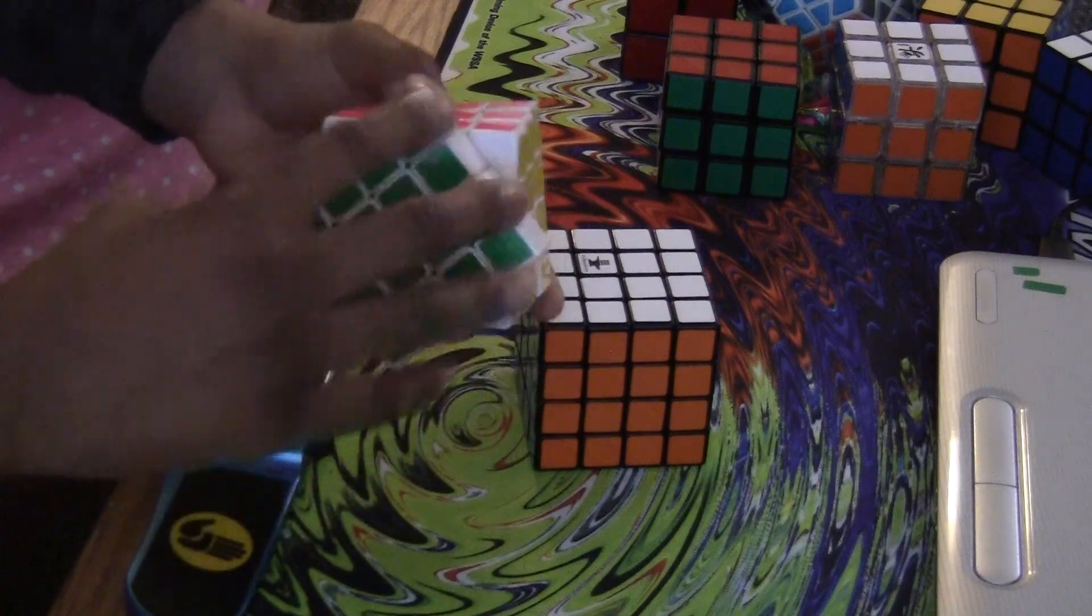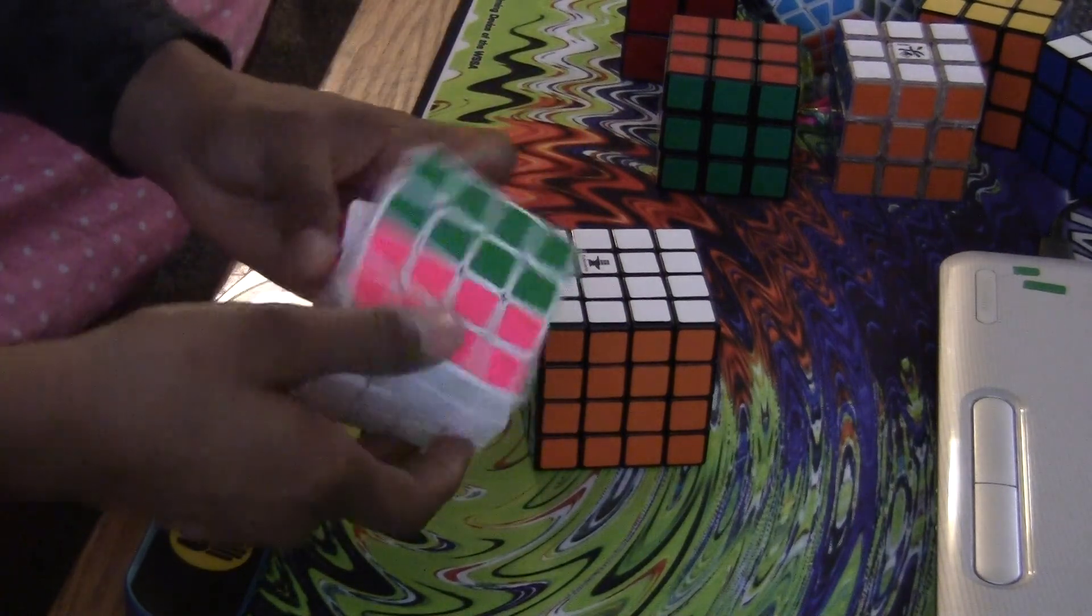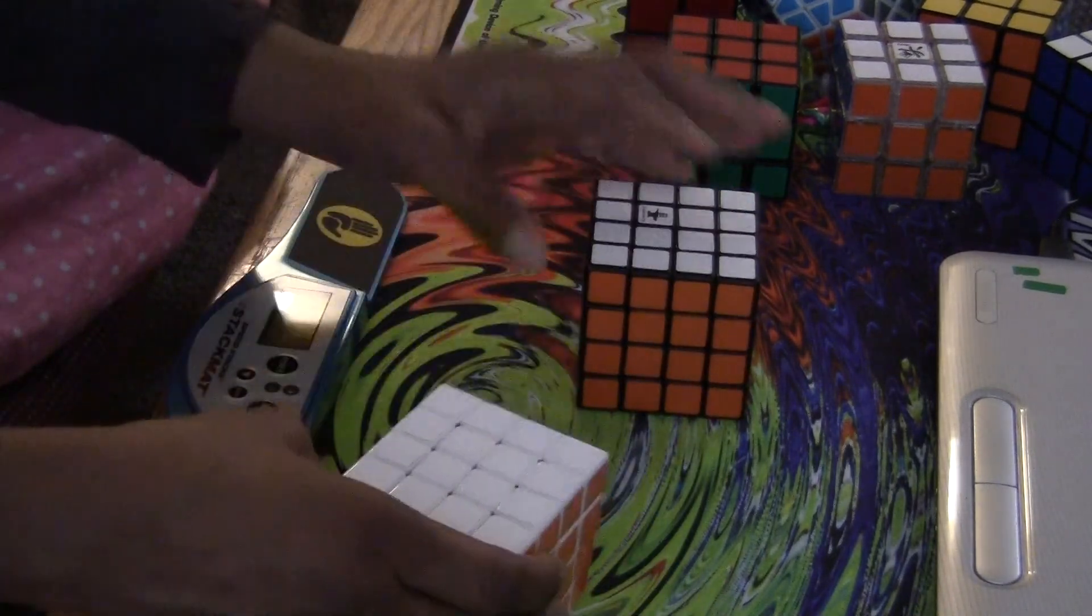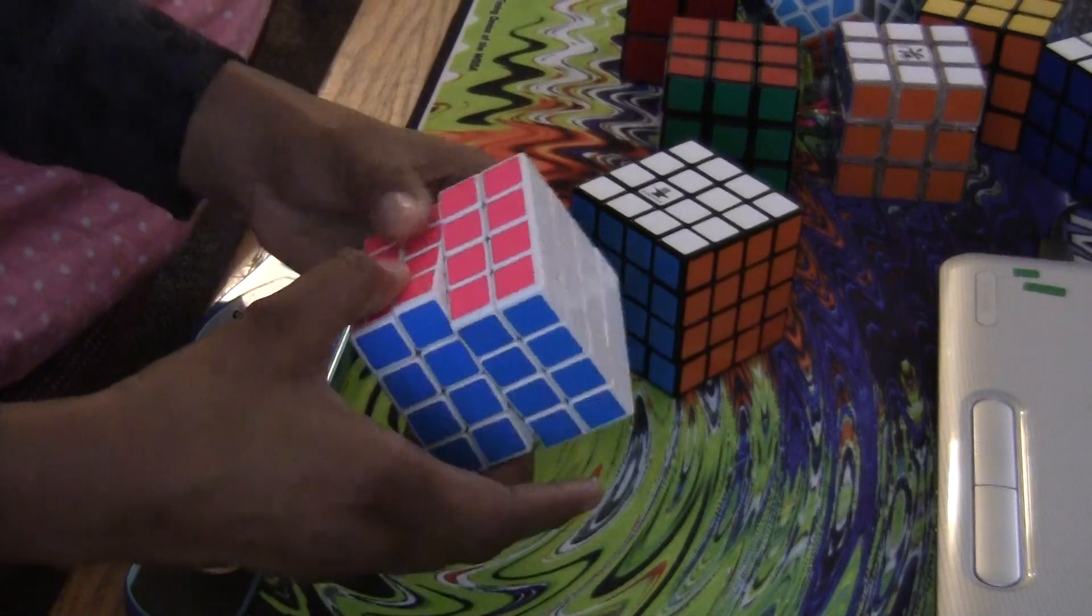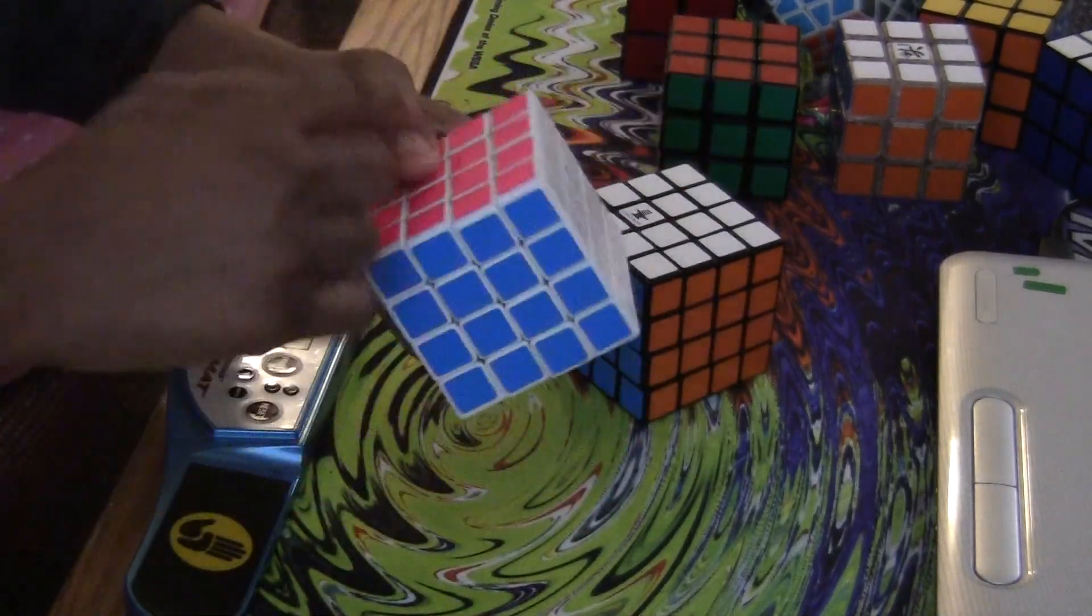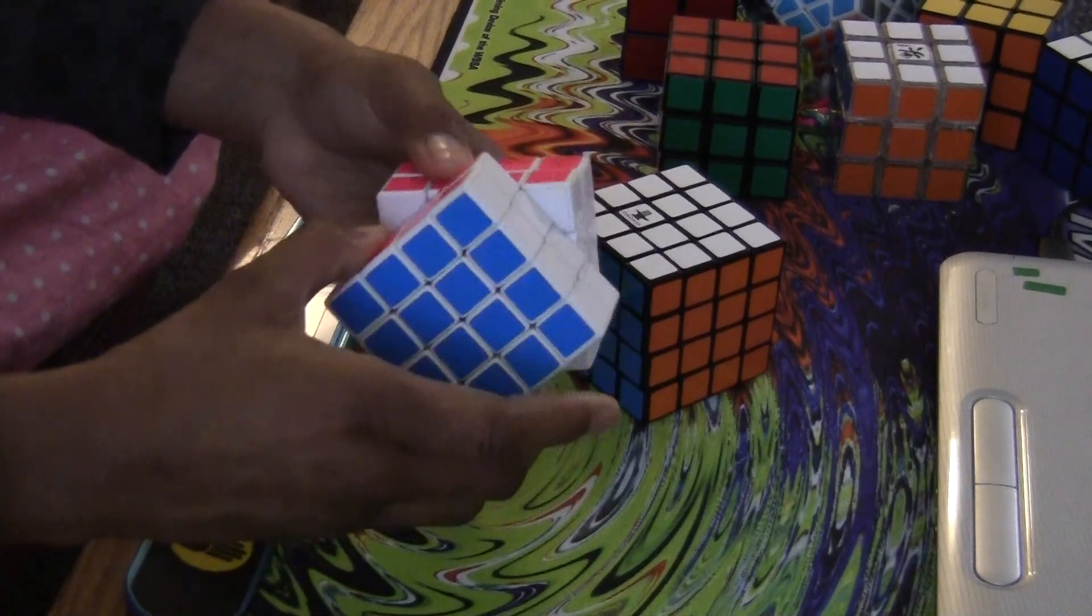And since I don't have to tighten the Ghost Hand as much as I have to tighten this one to prevent popping, it allows this one to have better corner cutting ability than this one because this one can be a little looser. Like I said, allowing me to have better corner cutting abilities.